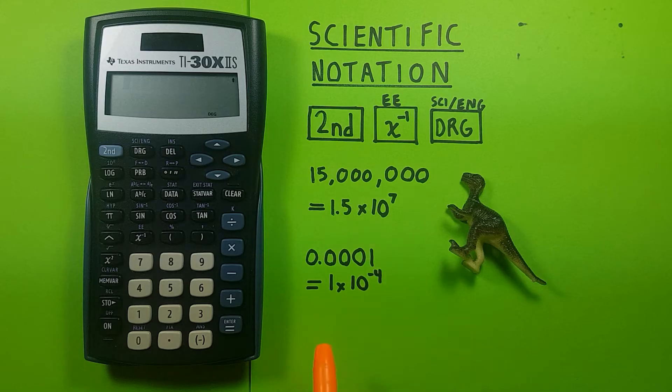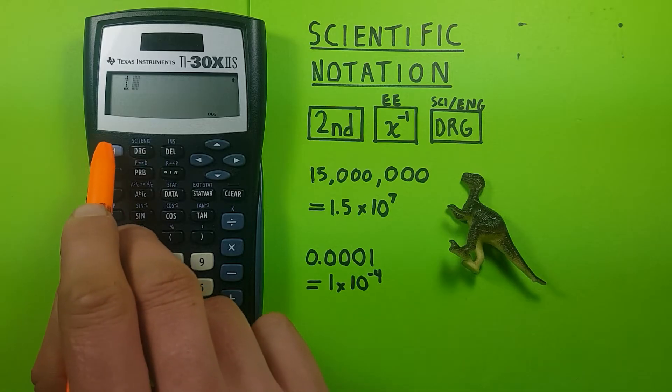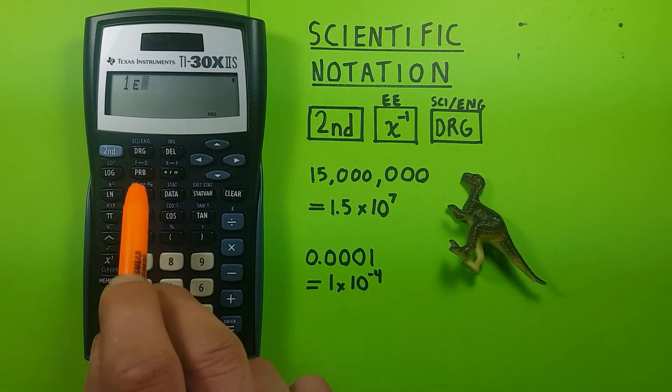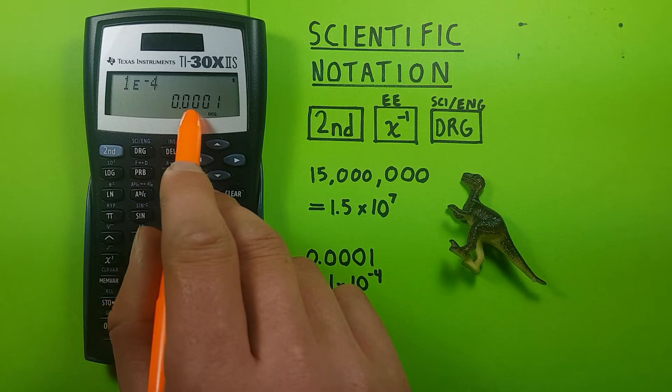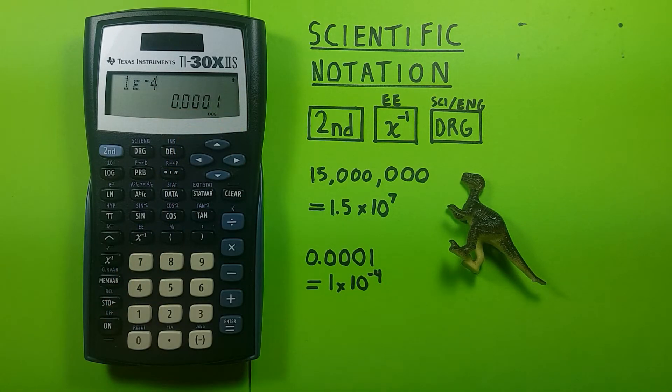You can also use this for small numbers. Let's say we were given 1 times 10 to the negative 4th, which should be 0.001. Well, we go 1, again second function, reciprocal, there's our EE, and we can use the negative sign this time, negative 4 equals 0.001. There we go, we've entered those numbers.